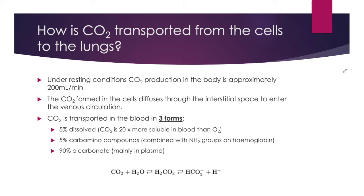CO2 is transported in the blood in three forms. 5% is dissolved — CO2 is 20 times more soluble in blood than oxygen. 5% is transported as carbamino compounds. And the majority, 90%, is transported as bicarbonate, mainly in the plasma.